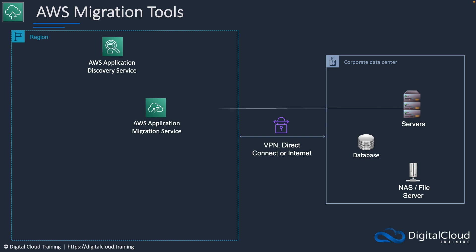Then we have the Application Migration Service. What we can do with the Application Migration Service is migrate things like our servers or virtual machines into AWS, and they can then be migrated into EC2 instances.